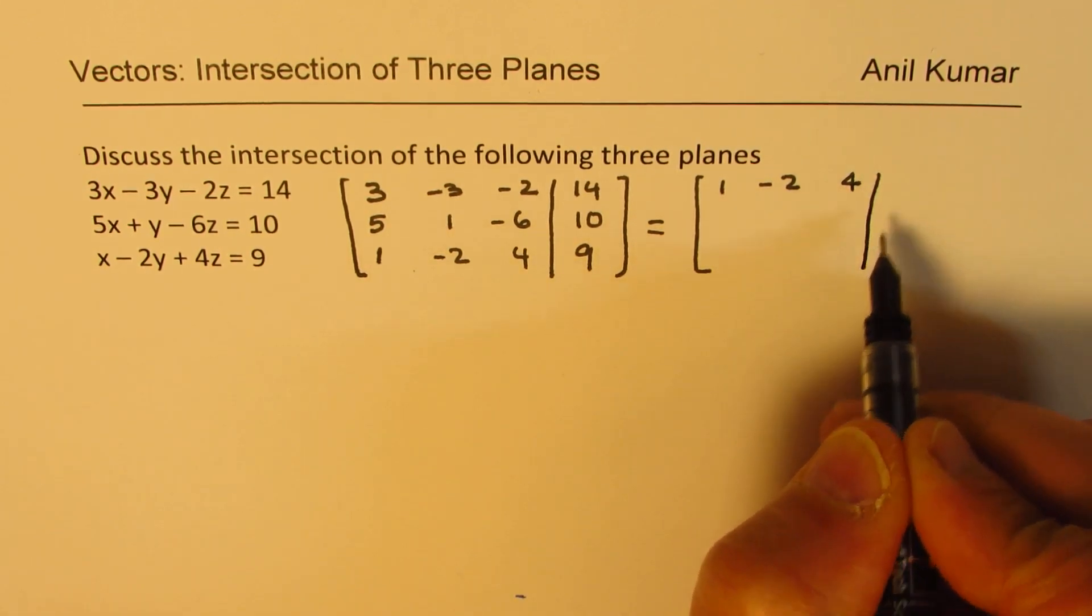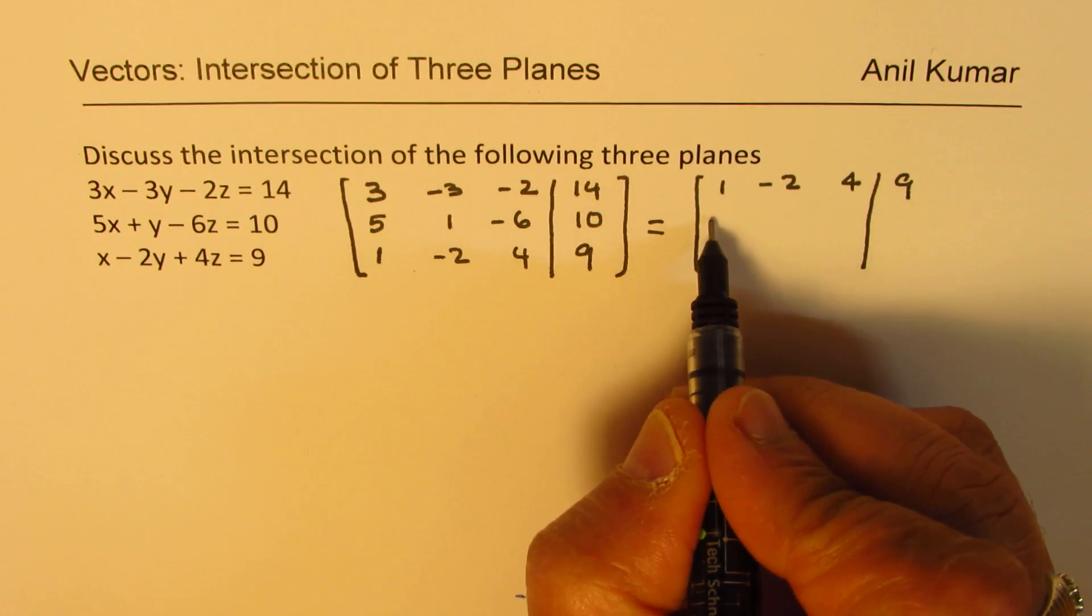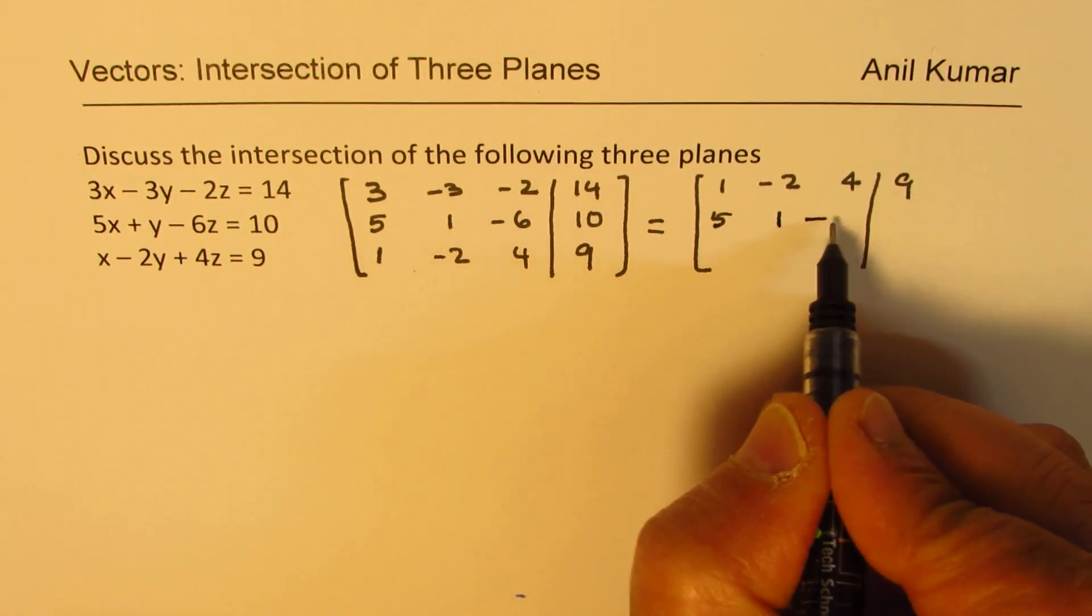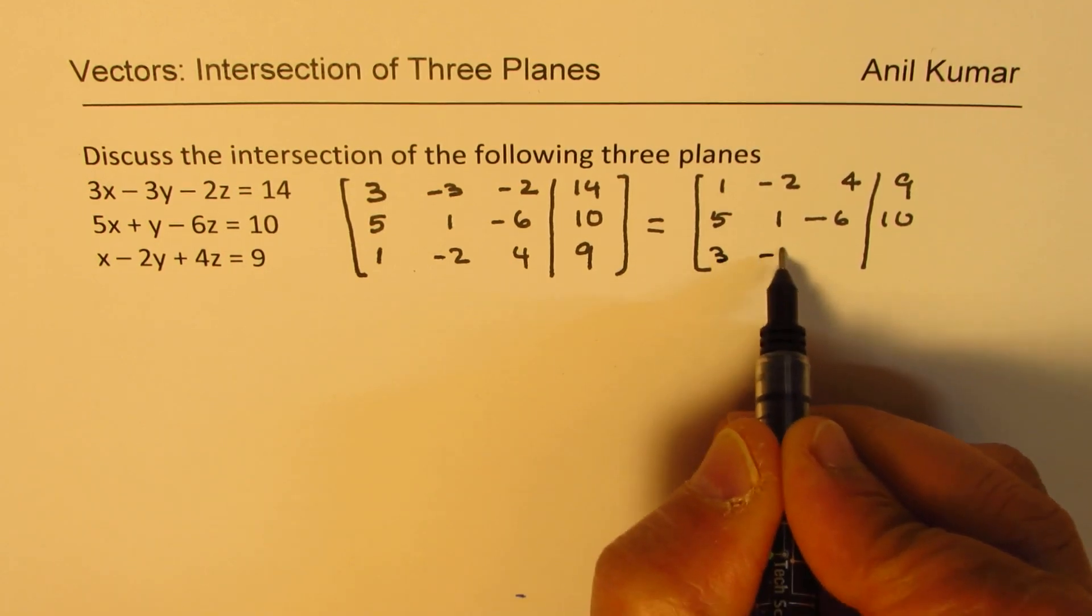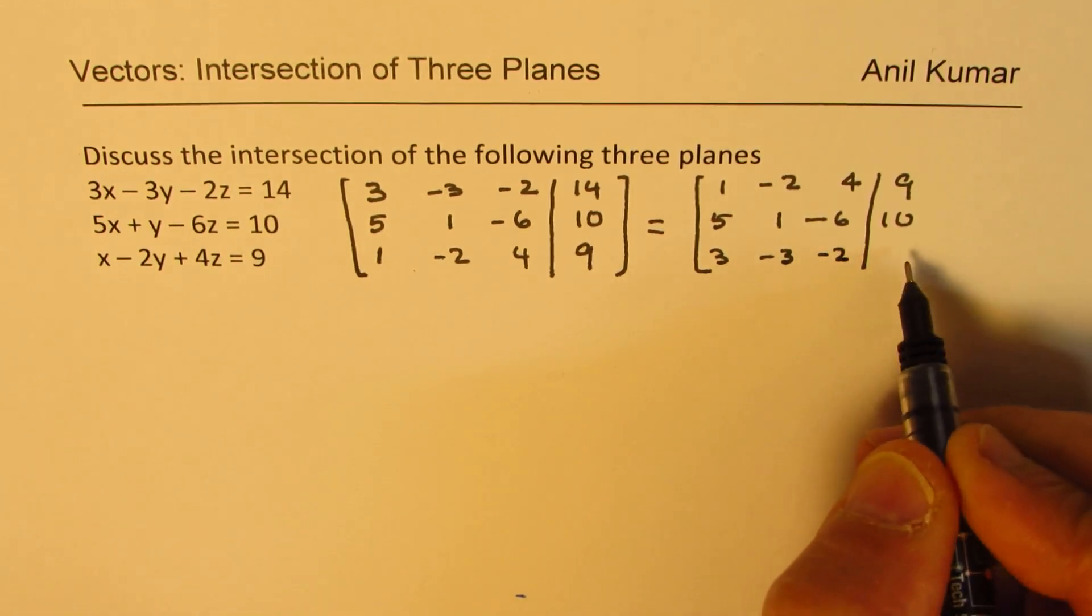Then we will retain 5, 1, minus 6, 10 as such and write down 3, minus 3, minus 2 as the third row.